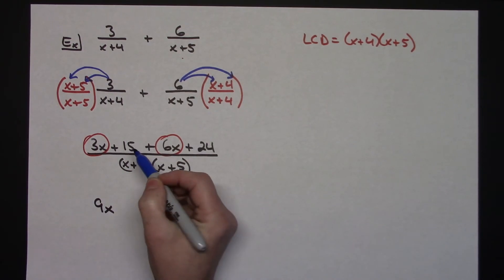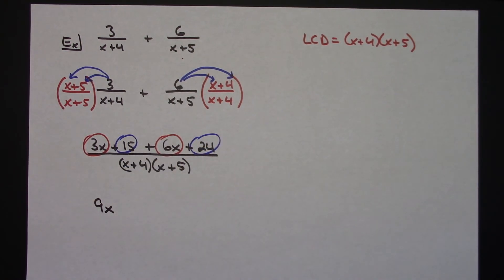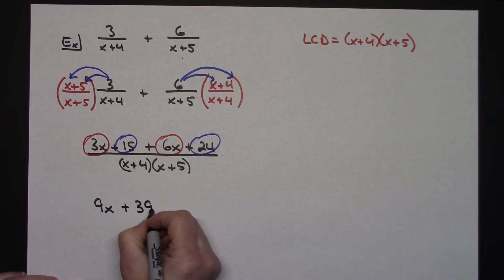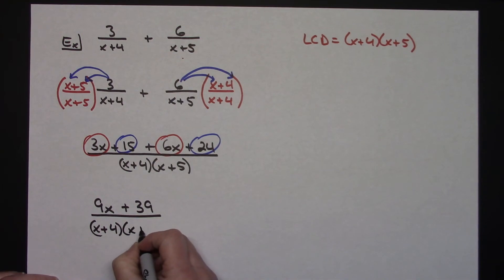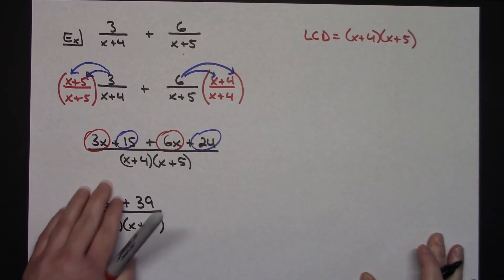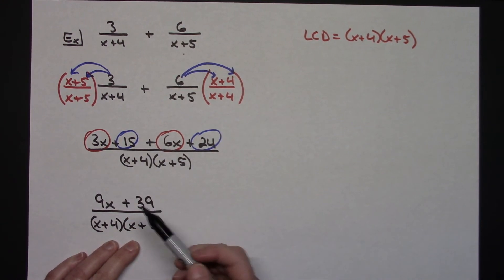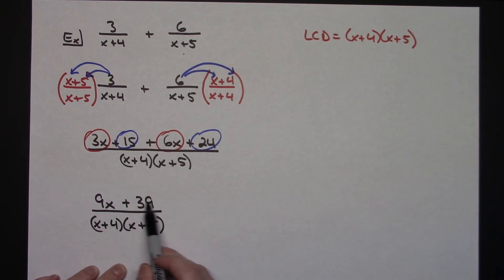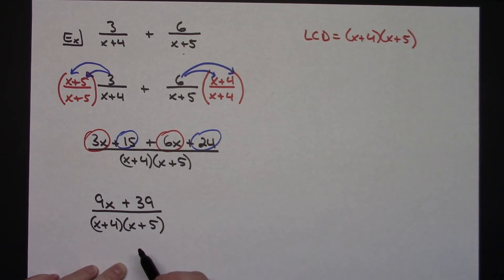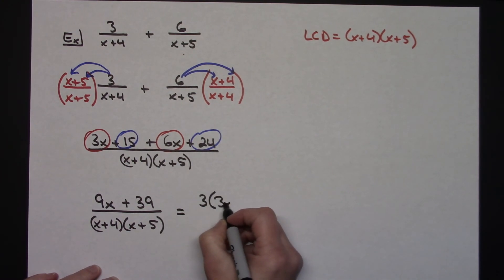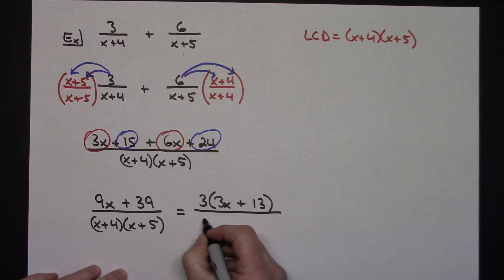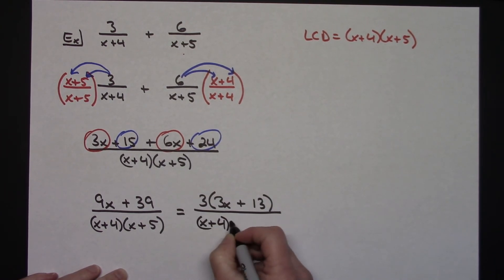Adding the constants — I've got 15 and 24, and when I add those I get 39 — all over the same denominator x plus 4 times x plus 5. That is an answer right there. However, you might want to factor out a greatest common factor on top. I can take a 3 out, giving me 3 times the quantity 3x plus 13, and my denominator stays the same, x plus 4 times x plus 5.